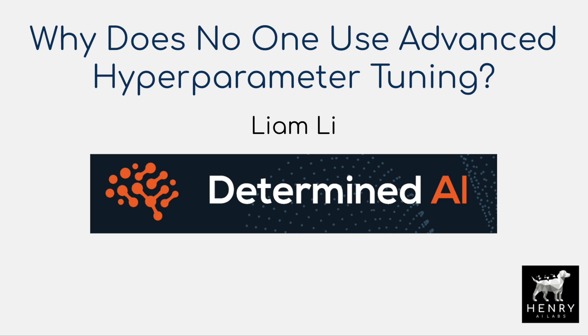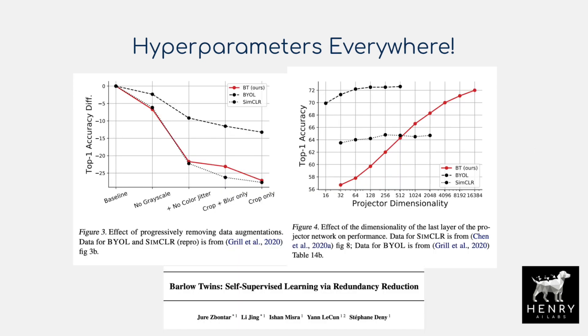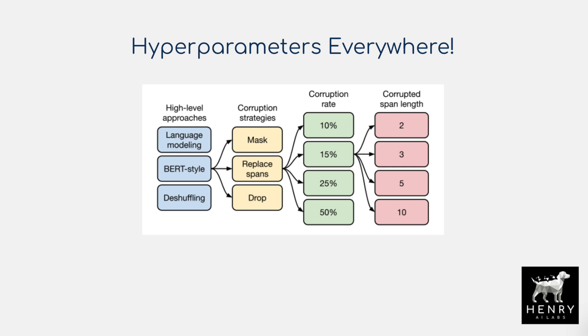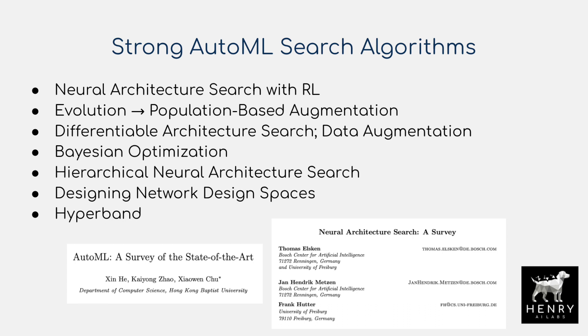Most people studying deep learning are aware that the hyperparameters of their architecture and training strategy have a huge impact on the resulting performance. Hyperparameter tuning, also known as AutoML and sometimes meta-learning, is one of the most active areas of research, producing things like NasNet, AmoebaNet, AutoAugment, and population-based augmentation, to give a few examples.